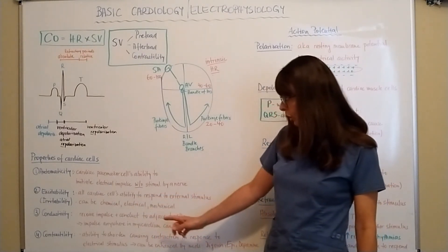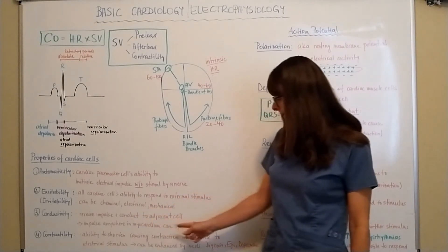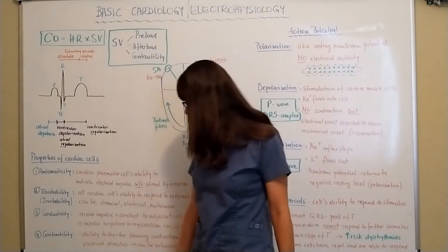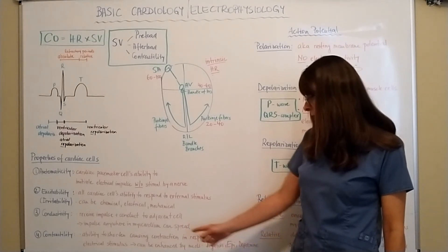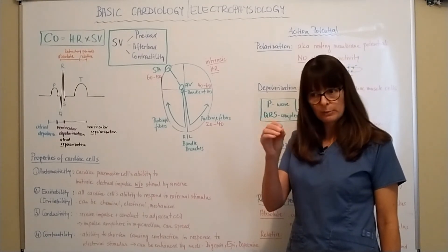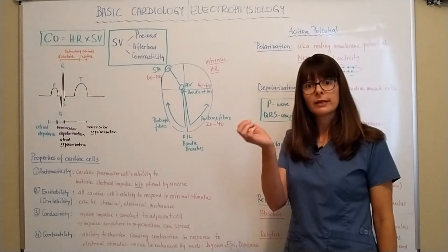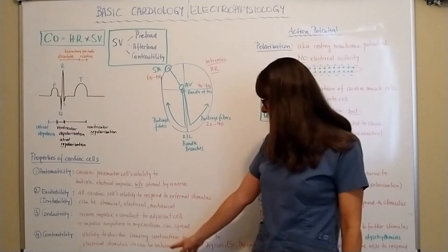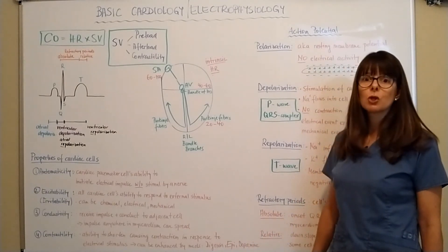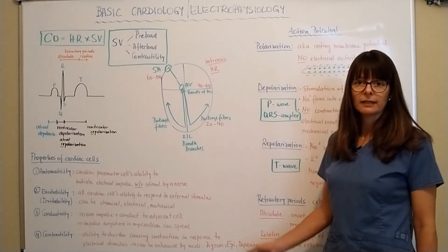Conductivity means cardiac pacemaker cells can receive an impulse and conduct it to the adjacent cell, so an impulse anywhere in the myocardium can spread. Contractility is the ability to shorten, causing a contraction in response to an electrical stimulus — that shortening causes the contraction and produces cardiac output. Contractility can be enhanced by certain medications, such as digoxin, epinephrine, and dopamine, which are very important when it comes to dysrhythmias.